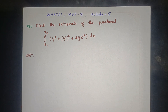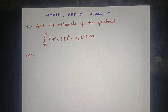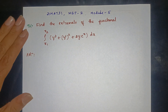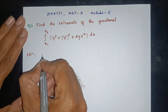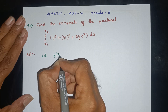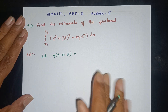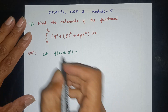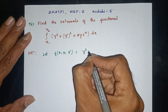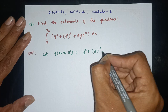Find the extremals of the functional integral from x1 to x2 of y squared plus y-dash squared plus 2y e to the power x, dx. Let f of x comma y comma y-dash be equal to y squared plus y-dash squared plus 2y e to the power x.